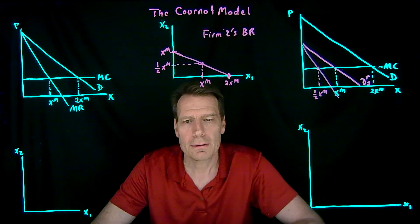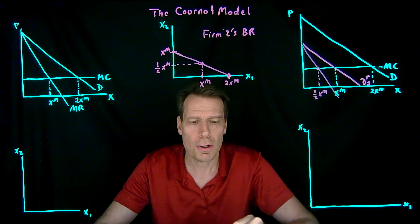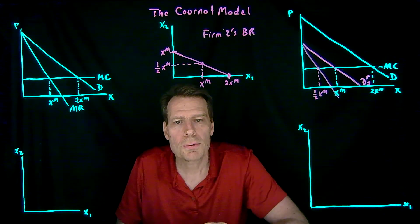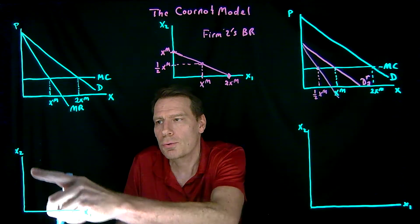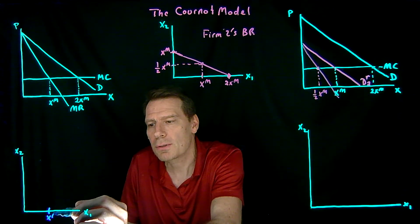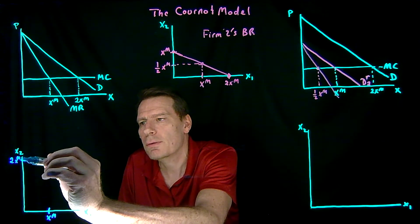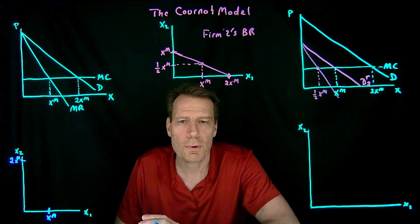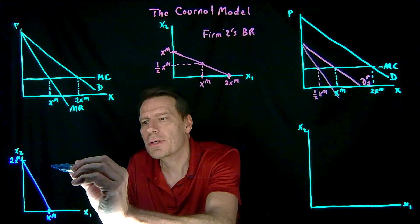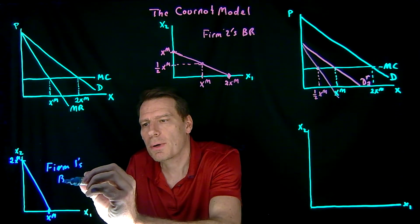Firm 1's best response function looks very similar because firm 1 is symmetric to firm 2 — it has the same marginal cost. If firm 2 produces nothing, firm 1 produces the monopoly quantity. If firm 2 produces twice the monopoly quantity, it drives price down to marginal cost and there is no room for firm 1 to produce anything. Connecting those points gives firm 1's best response function.